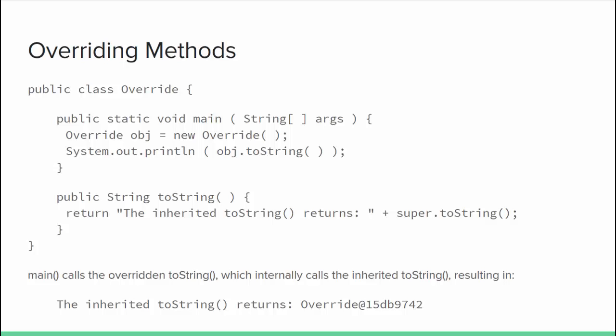Unfortunately, it is also possible to override an inherited variable — never do this. It creates what are called shadow variables. Inherited methods would still be using the inherited version of that variable name, but new methods you've written in the child class would be using the new version. There's no need for this and it's usually an accident caused when someone creates a child class without paying attention to all the variables being inherited. It almost always results in nightmarish debugging, so don't do it. Overriding methods is common and totally okay; overriding variables — never.